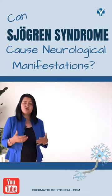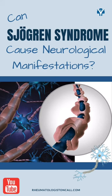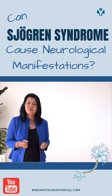More complicated situations include transverse myelitis or optic neuritis, which is an inflammation of the optic nerve. Some patients can even present with symptoms that look like multiple sclerosis, and rarely, patients with Sjögren's can present with brain inflammation that we call encephalitis.